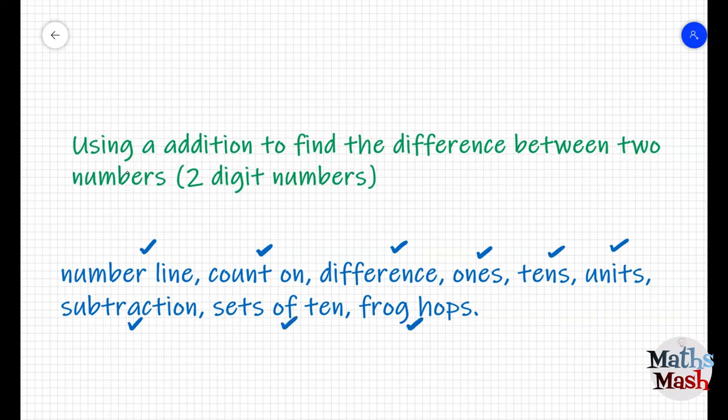To begin with let's have a look at our vocabulary words. Count on means the same thing as addition. You simply count on from the number you're on already. The word difference is another word for subtraction or taking away and it simply means how much bigger one number is than the other number.